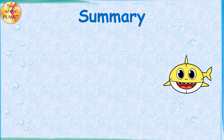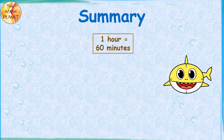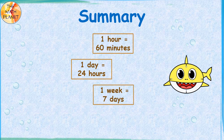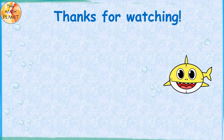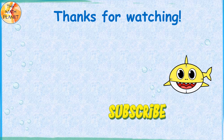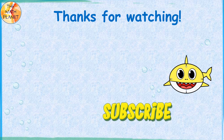To sum up, today we solved word problems that involve adding and subtracting time. The rules that we used are: 1 hour equals 60 minutes, 1 day equals 24 hours, 1 week equals 7 days, and 1 year equals 12 months. That's all for today. Thanks for watching The Math Planet. Don't forget to subscribe for more videos. See you next time.